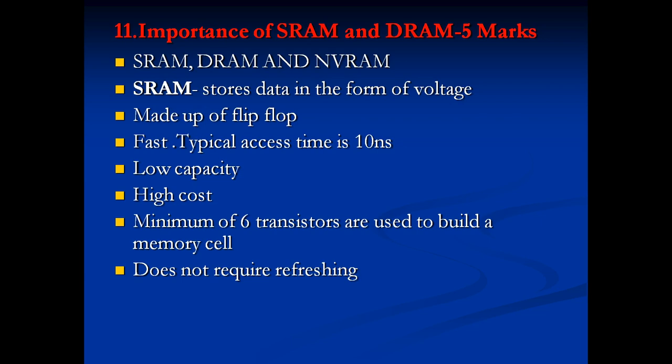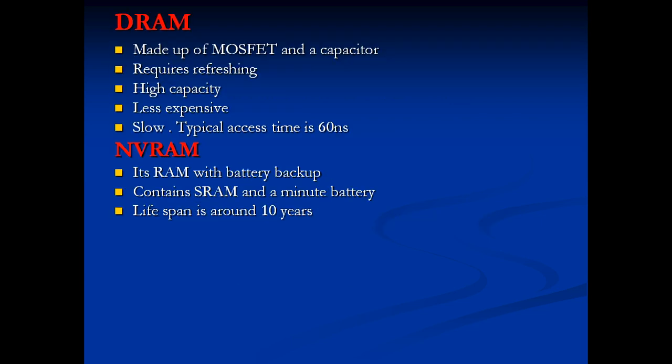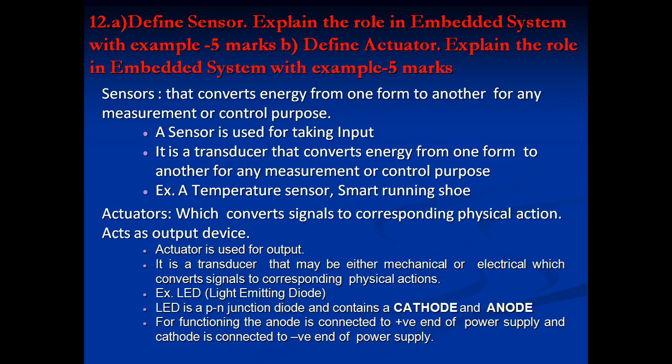SRAM needs a minimum of six transistors to store a single bit and does not require refreshing. DRAM — Dynamic RAM — is made of MOSFETs and capacitors and requires refreshing because of the capacitors. It has high capacity, is less expensive, but is slower with an access time of 60 nanoseconds. NVRAM — Non-Volatile RAM — is RAM with a battery backup; contents are not lost when power is off. It contains SRAM and a battery, with a lifespan of around 10 years.